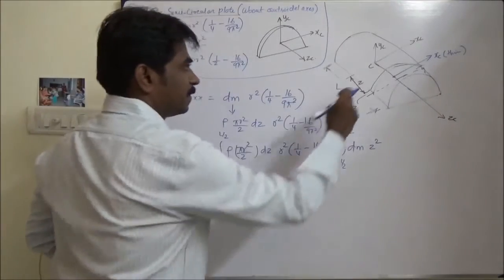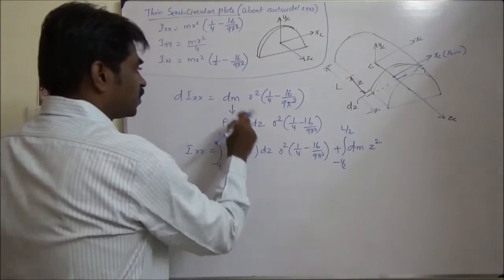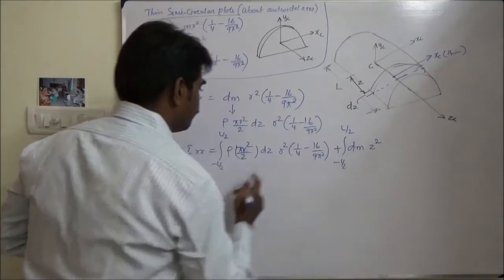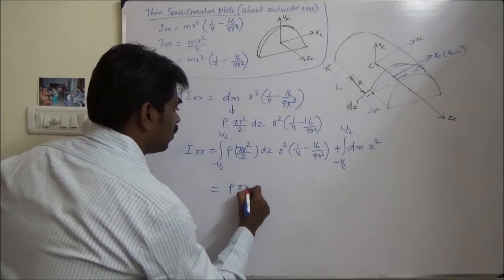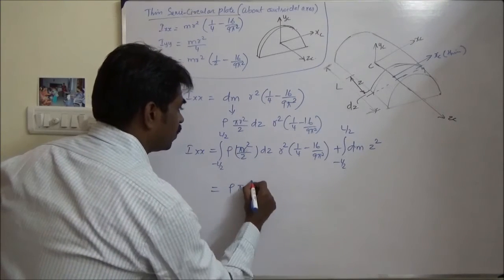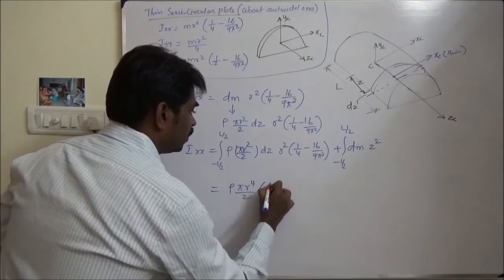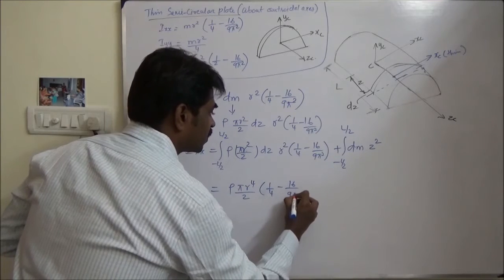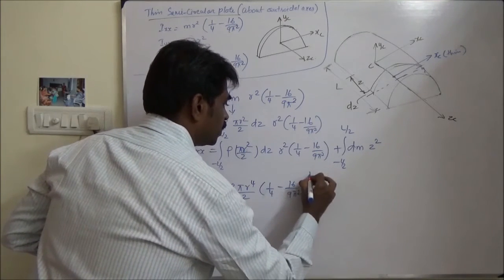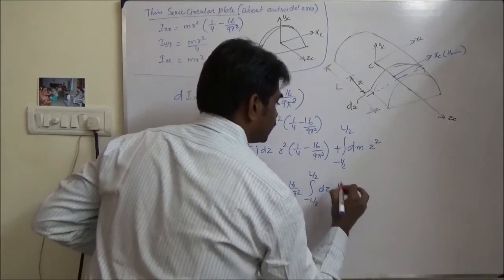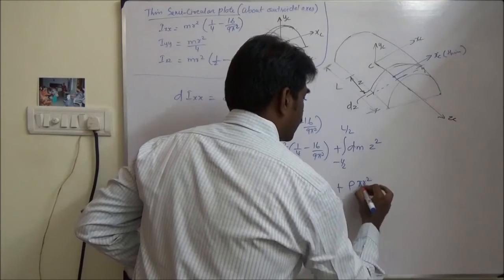Substituting dm, we get: rho pi r to the power 4 by 2 times dz, plus rho pi r squared by 2 times the integral from minus L/2 to L/2 of z squared dz.